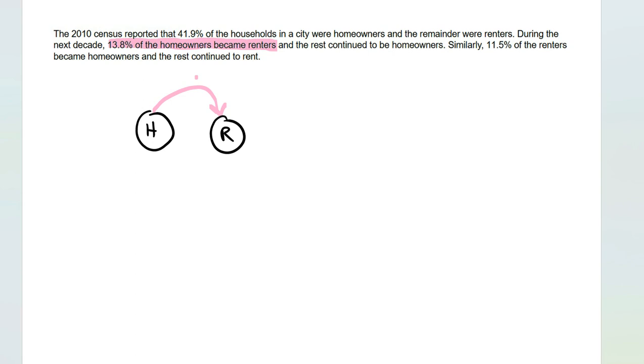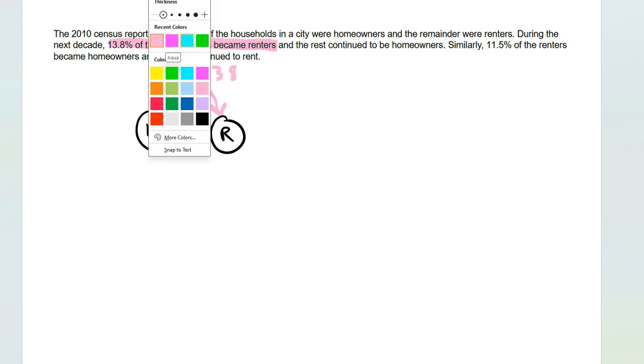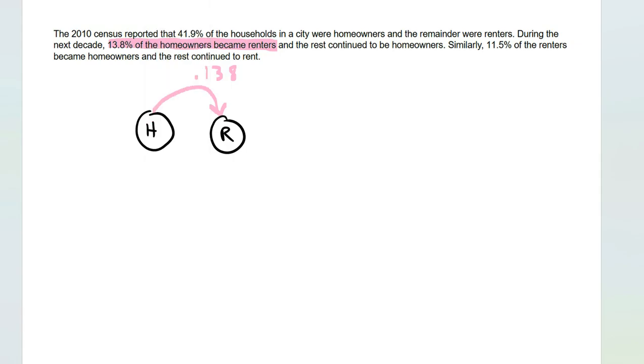So homeowners became renters, that's 0.138 and the rest continued to be homeowners. Let's take 1 minus 0.138 and that is 0.862.